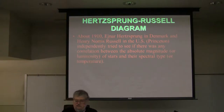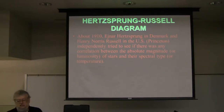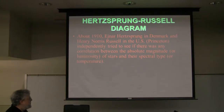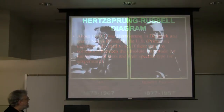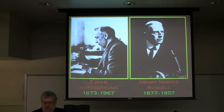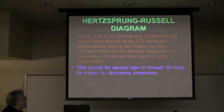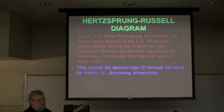Remember the spectral classifications O-B-A-F-G-K-M, from the blue stars on the left side to the red stars on the right, with yellow ones like the sun in between. They wanted to see if there's any correlation between the luminosity and the spectral type, which also involves the temperature. Hertzsprung and Russell worked independently and unaware of each other's work until somewhat later on. They plotted the spectral type on the x-axis with decreasing temperature.